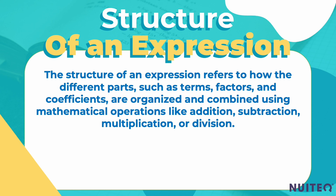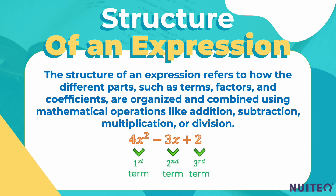To interpret the structure of an expression, we need to look at each term and how they're connected by mathematical operations. Let's take an example: 4x² minus 3x plus 2. This expression has three terms — 4x², minus 3x, and 2. Each term has its own structure, with factors and coefficients. The terms are connected through addition and subtraction.